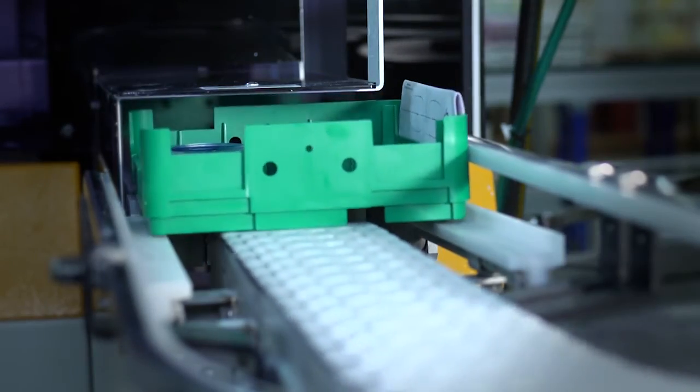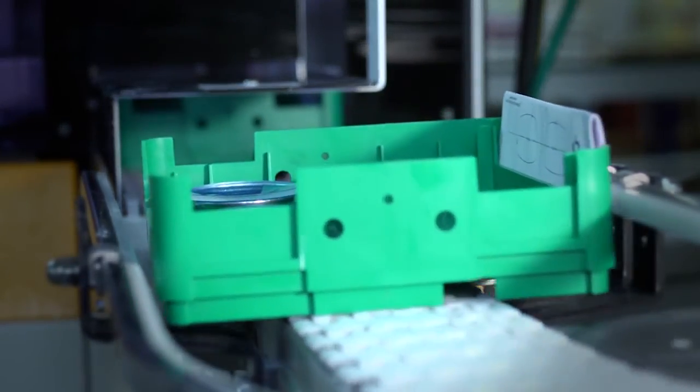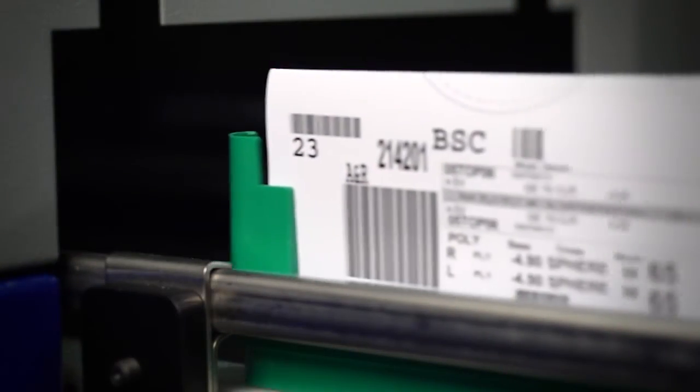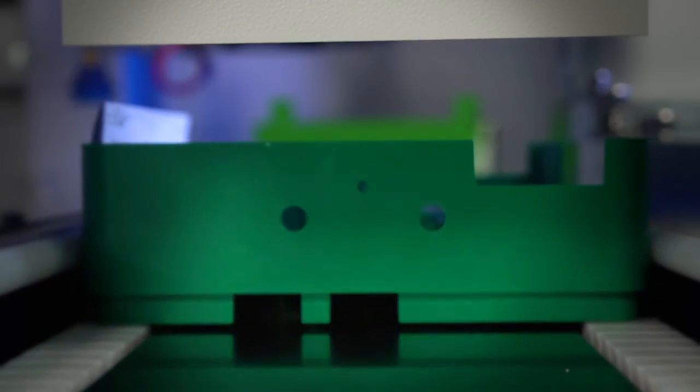Trays will continue to automatically load and unload into the 44R as long as work is being supplied to the conveyor system. When it comes to your coating needs, choose a company that has been supplying the most robust equipment and coating chemistry for over 30 years.